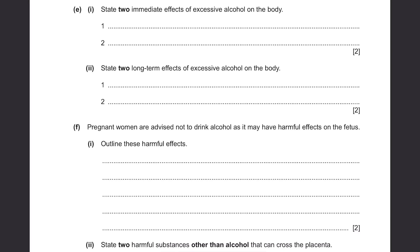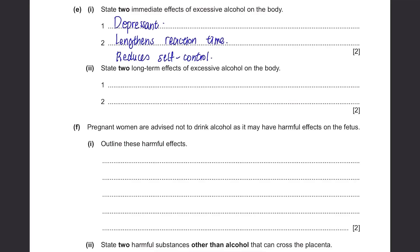Part E: State 2 immediate effects of excessive alcohol on the body. Alcohol is known as a depressant, which means it can immediately calm you down. It also lengthens reaction time, so you react much slower compared to when you're sober. It also reduces self-control and you tend to become more reckless. You just need to write two of these.